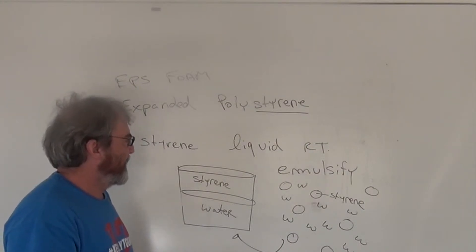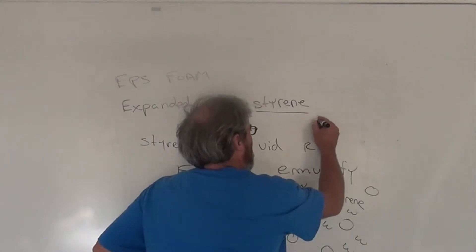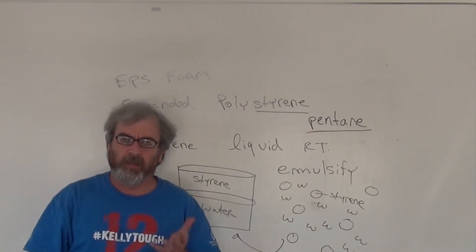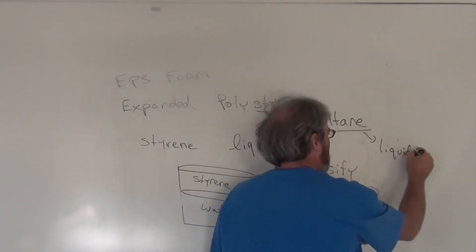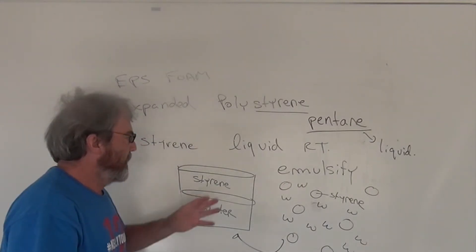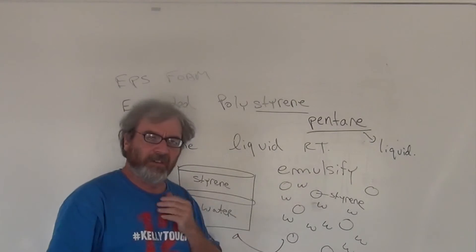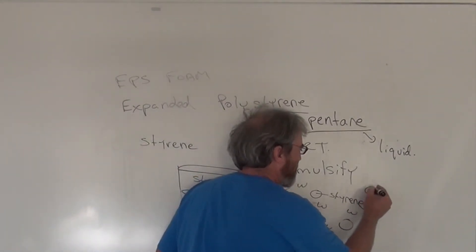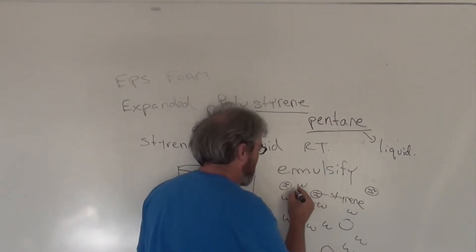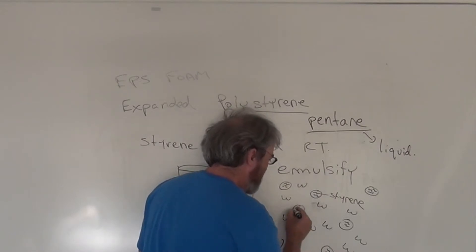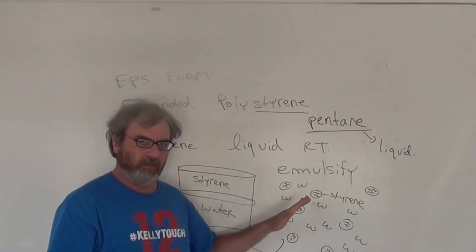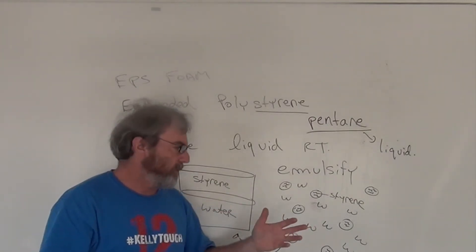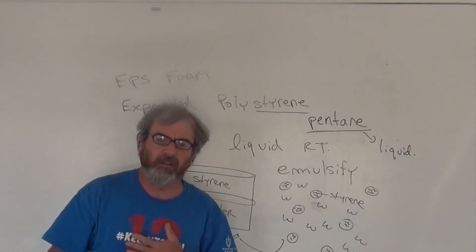Now, the next thing we do to make EPS is we add pentane to this emulsion. Pentane is a hydrocarbon, it's like propane and butane. But pentane at room temperature is a liquid. And pentane likes the styrene oily phase. It doesn't like to dissolve in water. So if we add pentane to this system, what happens is the pentane molecules swim around and they find themselves inside the styrene. So this is just a styrene monomer. It hasn't been polymerized yet. Little domains of styrene monomer floating around in water, dispersed in water as an emulsion with pentane soaked up into the styrene domains.